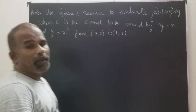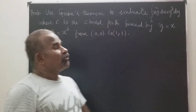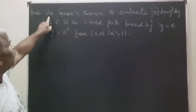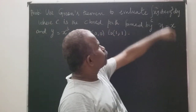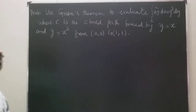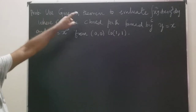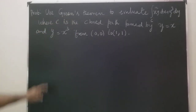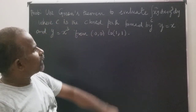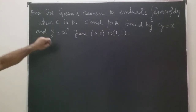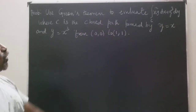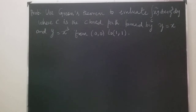Good morning. We are going to evaluate this integral of x squared y dx plus y cubed dy using Green's theorem, where c is the closed path formed by y equals x and y equals x cubed from (0,0) to (1,1).